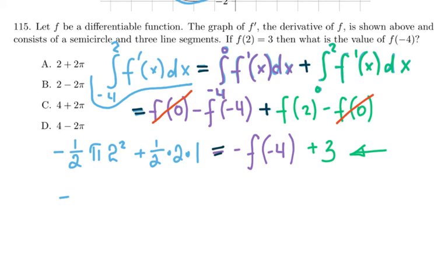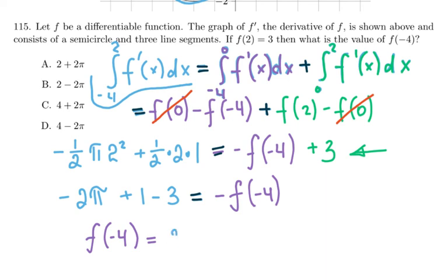I have -2π + 1 - 3 is equal to -f(-4). So f(-4) is going to be equal to 2π.